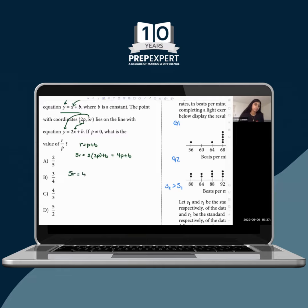I have 5r equals 4p plus b, and r equals p plus b. So they're asking me for r over p.